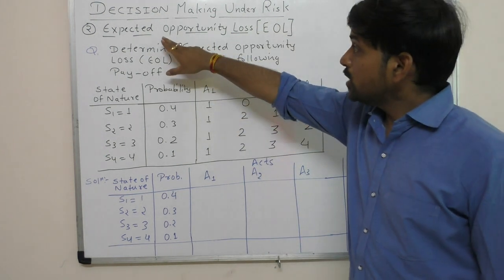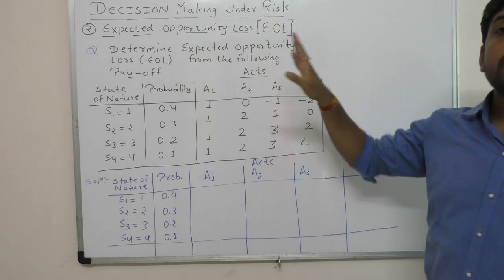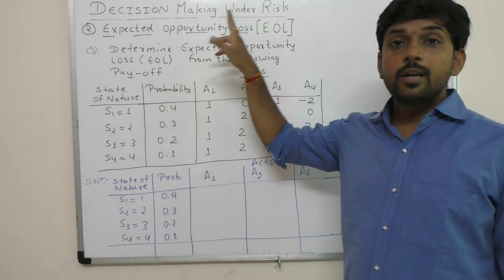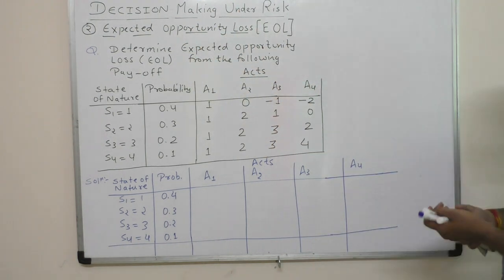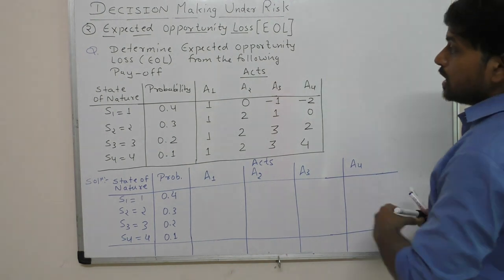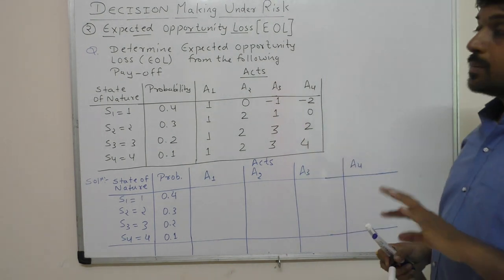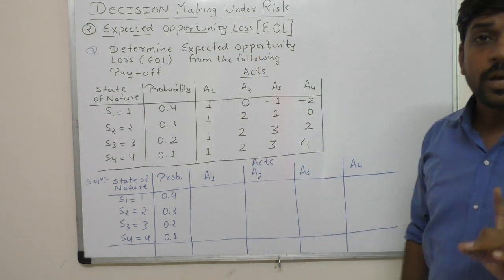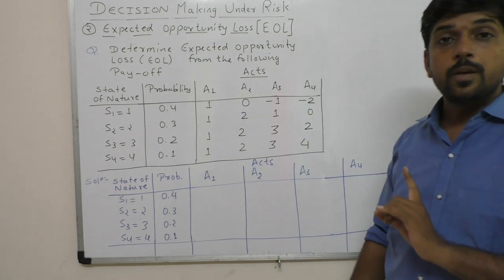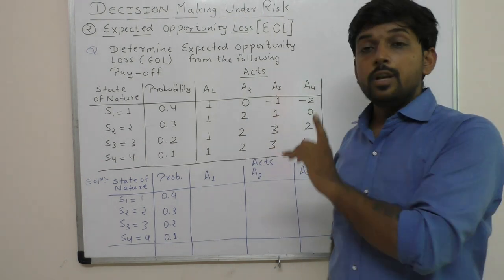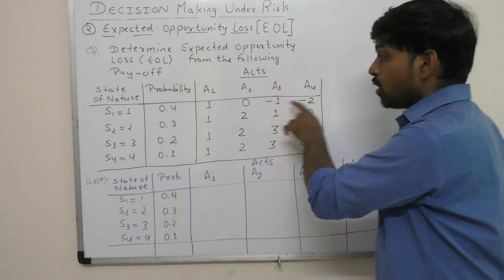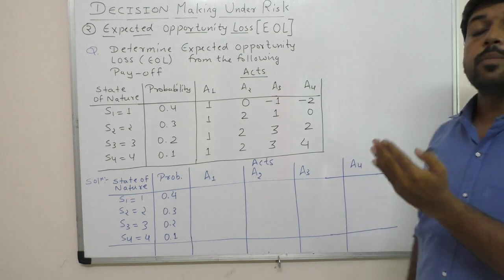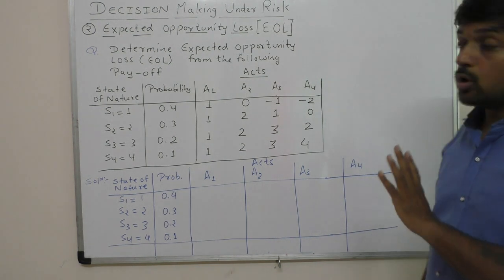In this case, what is the opportunity loss? The expected value is used, and this is also known as expected regret. How is the logical analysis done? If you are given the payoff matrix, the most important thing is the opportunity loss or regret. In the first video, we saw the regret concept — for a particular state of nature, we identify the highest payoff and subtract each payoff from it to get the regret.